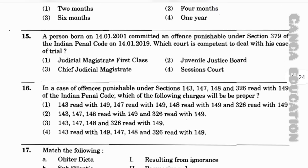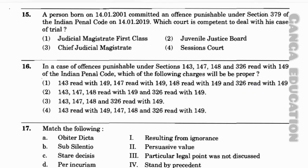Question number 15: A person born on 14th January 2001 committed an offence punishable under Section 379 of the Indian Penal Code on 14th January 2019. Which court is competent to deal with his case? Option 1: Judicial Magistrate of First Class; option 2: Juvenile Justice Board; option 3: Chief Judicial Magistrate; option 4: Sessions Court. The correct answer is option 1 — Judicial Magistrate of First Class, as he had attained majority.